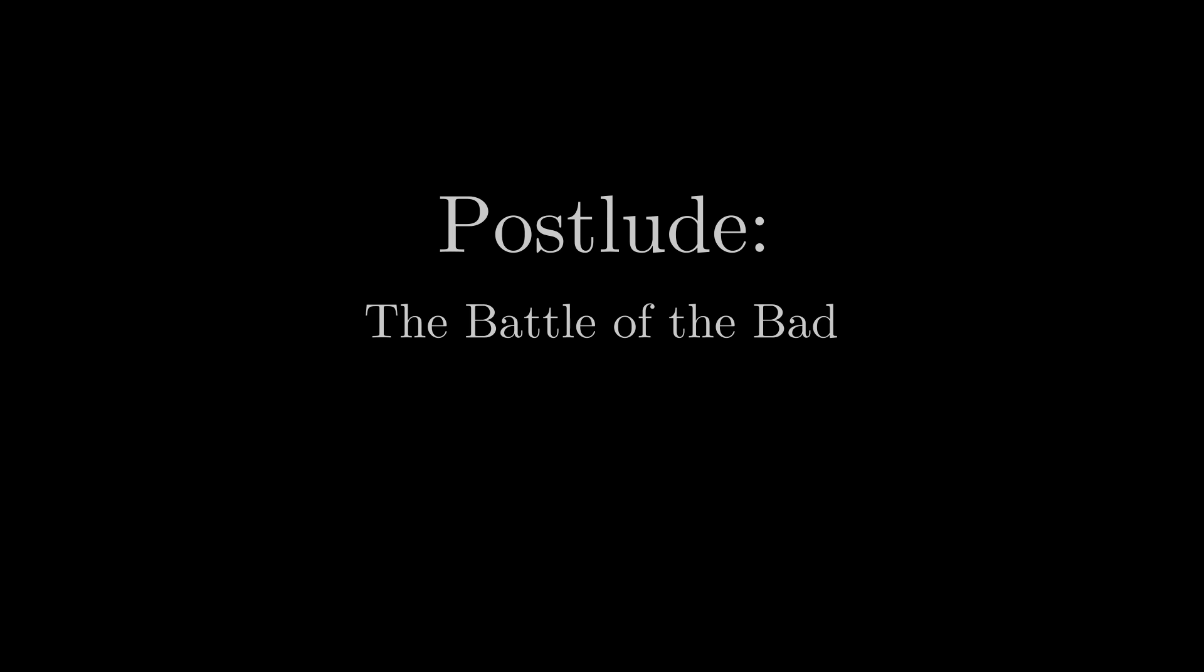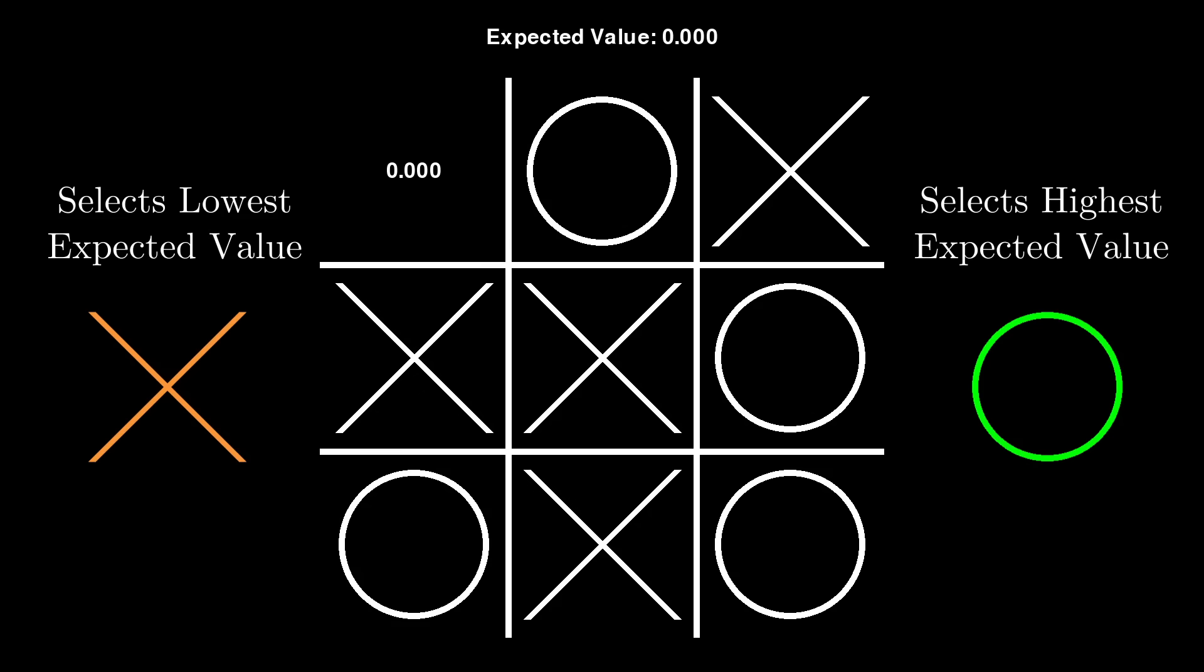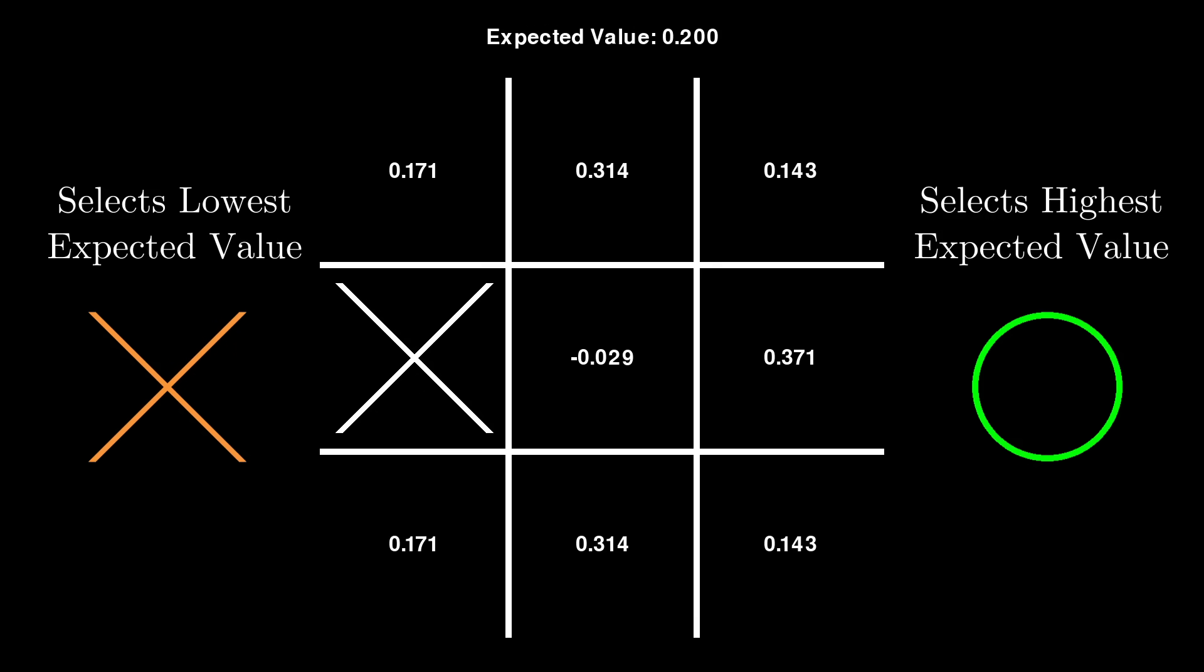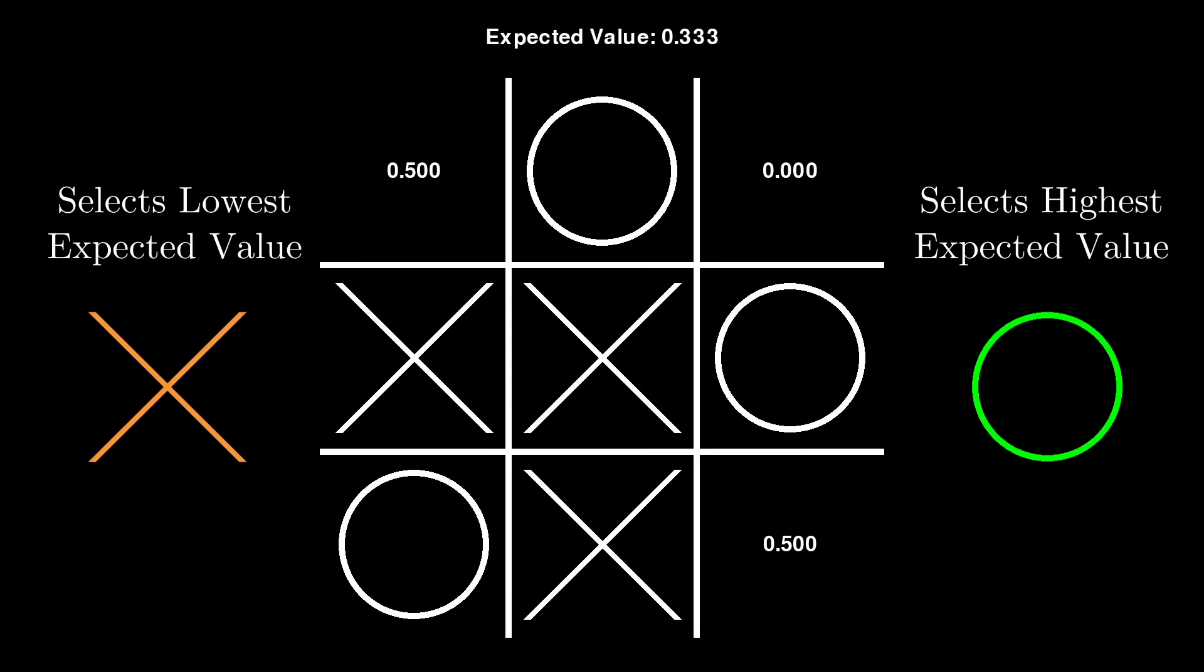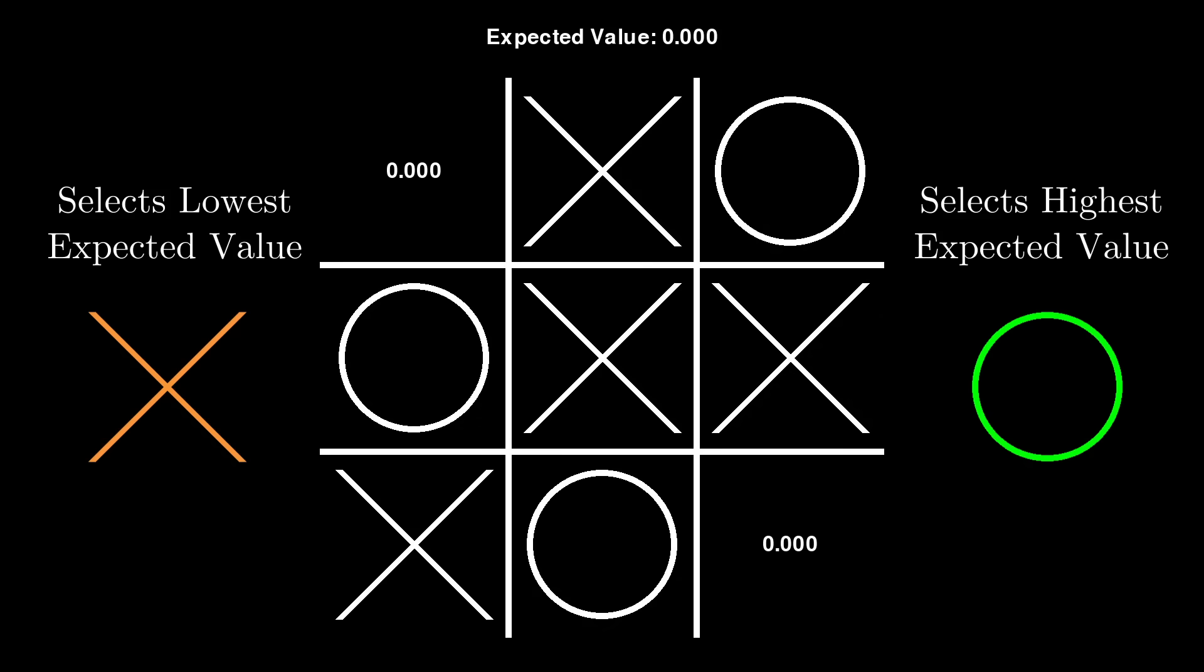One last thing. Just for fun, I decided to try playing two of my optimally bad tic-tac-toe players against each other. Now, often there was more than one equally bad choice. For example, at the beginning, any edge is equally bad. So I mapped out all the possible worst games and came up with a number.